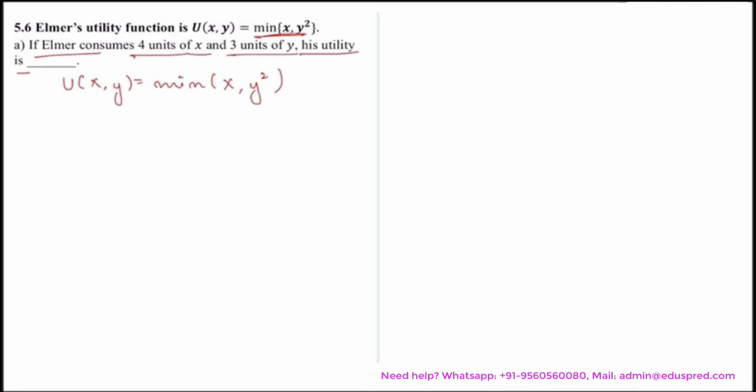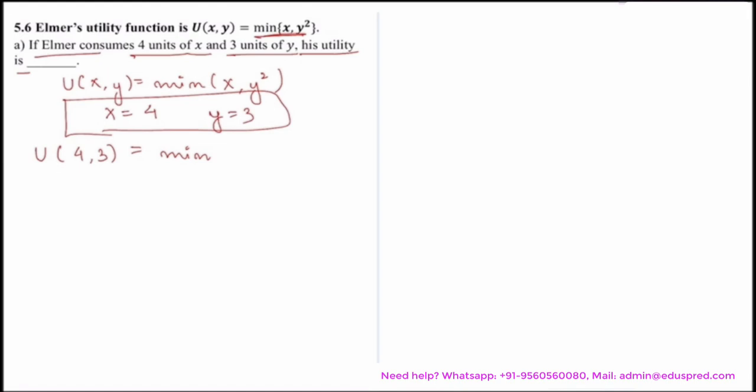According to the question, x is equal to 4 and y is equal to 3, and we have to calculate the utility at this combination. So your utility would be at (4, 3). All you have to do is substitute the values — x with 4 and y with 3 — into the function. That would be minimum of 4, 3 squared, since y is taking the square here.